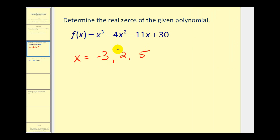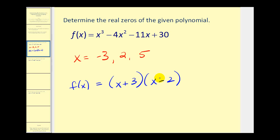One last connection: if these are the zeros of this function, this helps us rewrite it in factored form. If x equals negative three is a zero, then x plus three is a factor. If x equals two is a zero, then x minus two is a factor. And if x equals five is a zero, then x minus five is a factor. Substituting these values into the factored form would make the function equal to zero.